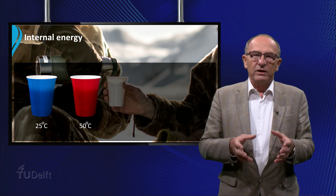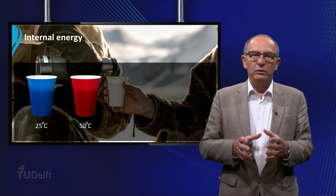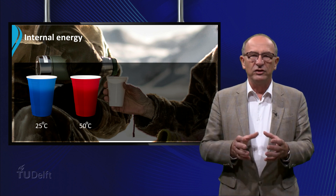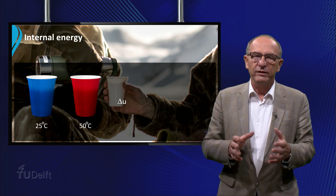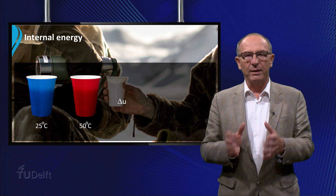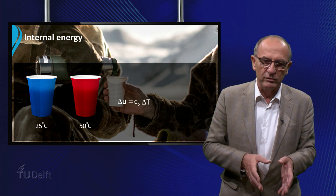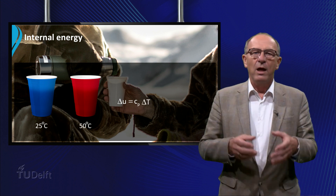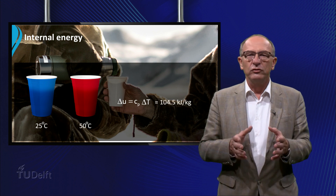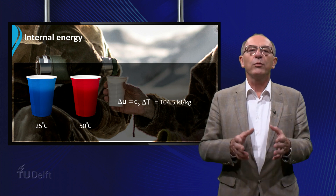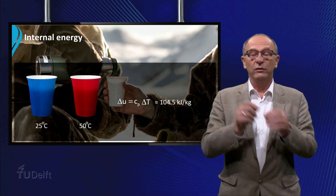From thermodynamics we know that for liquids in a constant volume, the change of the internal energy u per unit of mass can be written as the product of the heat capacity of the fluid and the temperature difference. So we have to add 104.5 kilojoules to heat one kilogram of water from 25 to 50 degrees.